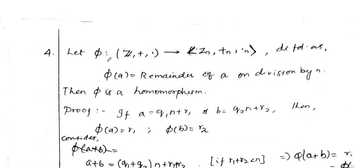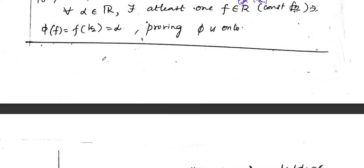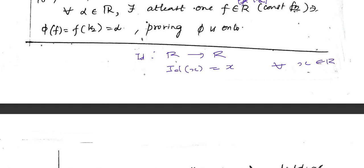Even the identity mapping is an example. When we consider the identity mapping from any ring R to itself, which takes any element to itself, this identity function is also a homomorphism.